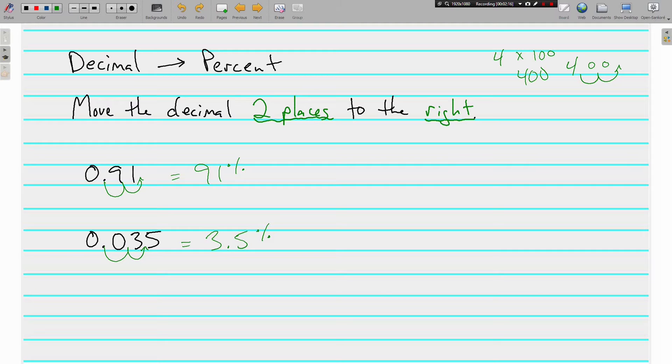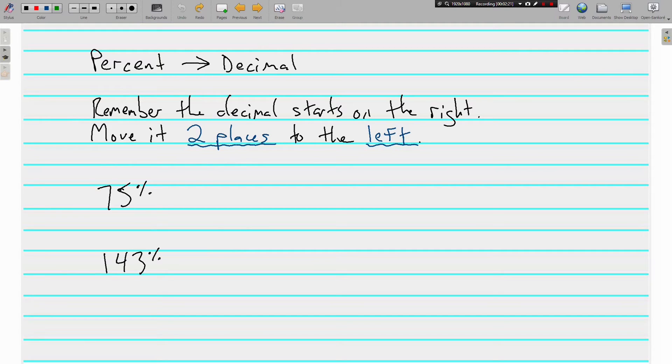Decimal to percent is pretty easy, and percent to decimal, two places to the left. If decimal to percent was two places right, then going backwards is two places to the left. What we're doing here is we're actually dividing by 100,